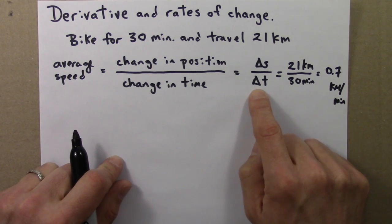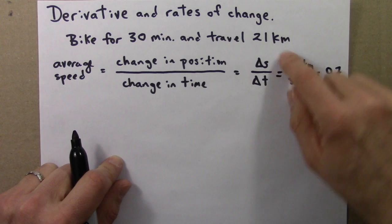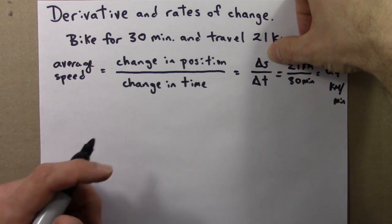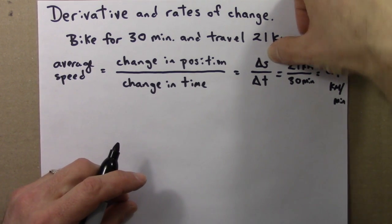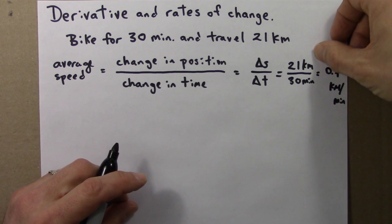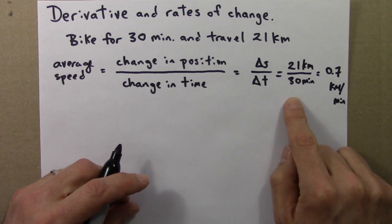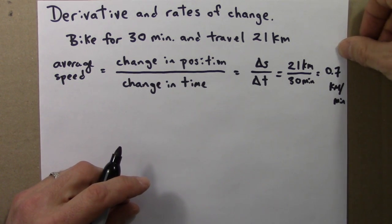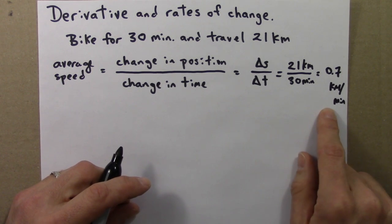Delta, this triangle thing, means change in. S here will stand for change in position, how far you went. And so, you went 21 kilometers in 30 minutes, and so that would be 0.7, and the units are kilometers per minute.